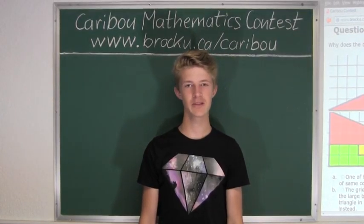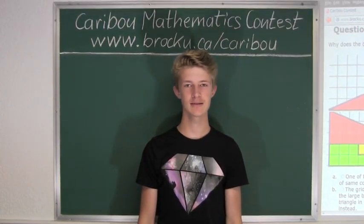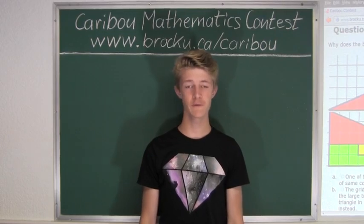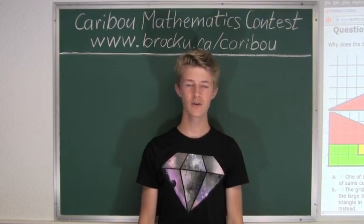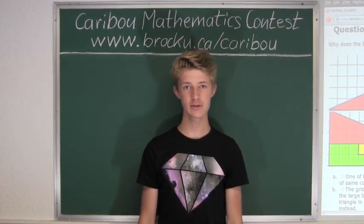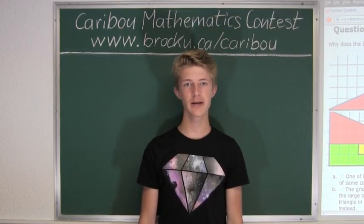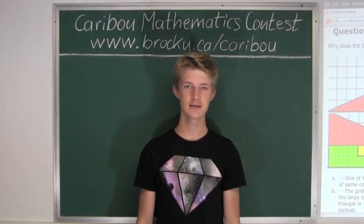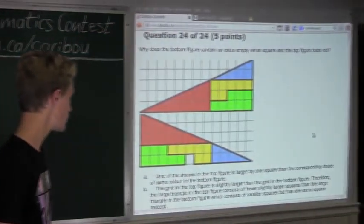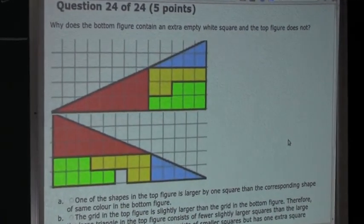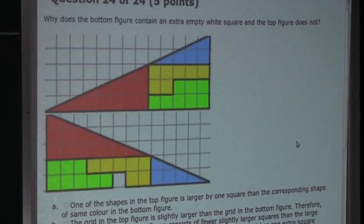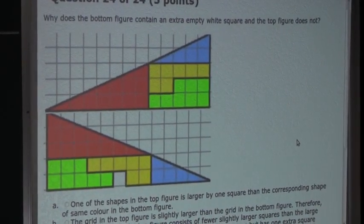Hi, this video is about the Caribou Mathematics Contest. I'm going to show the solution for the May 2014 Grade 9-10 Contest Question 24, which also came up in the Grade 11-12 Contest. So the question is: why does the bottom figure contain an extra empty white square and the top figure does not?